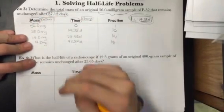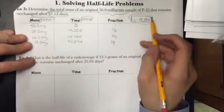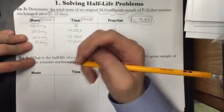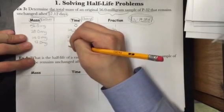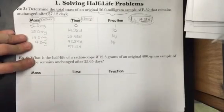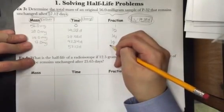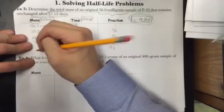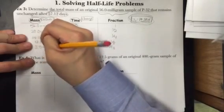I have to let yet another half-life pass, which means another 14.28 days. So if I add 14.28 days to this, I now get the time I desire, which is 57.12 days. The fraction, since another half-life has passed, I have to halve it again, giving me one-sixteenth. I have to halve this again, giving me 3.5 milligrams.